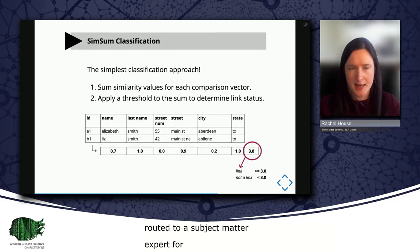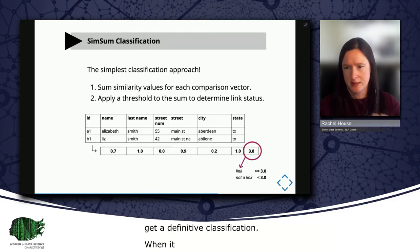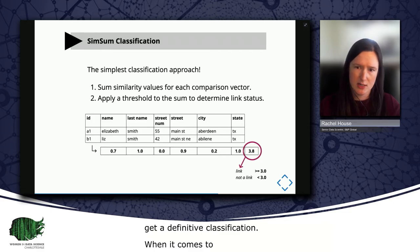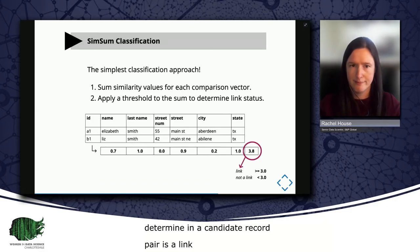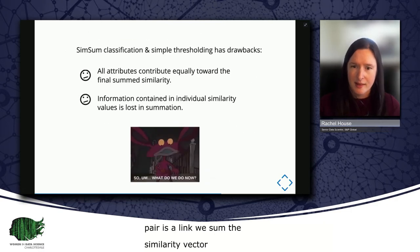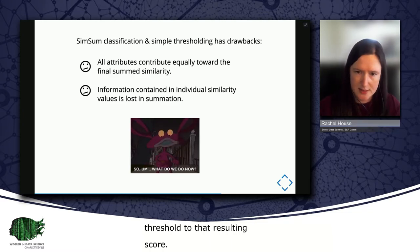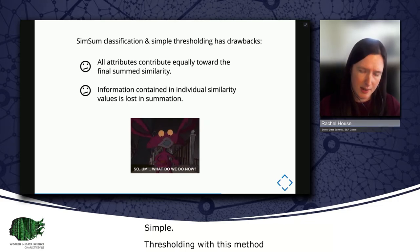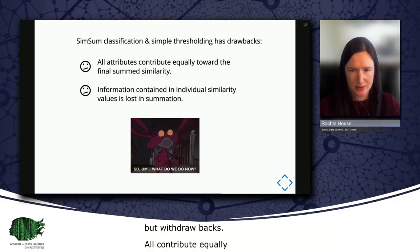When it comes to classification approaches, the simplest method is SimSum, which is a cute moniker for summing the similarity scores of the comparison vector. And as you can see in the example, to determine if a candidate record pairs a link, we simply sum the similarity vector and apply a threshold to that resulting score. Simple. Thresholding with the SimSum method, however, though straightforward, has some drawbacks. Namely, all attributes contribute equally to that final sum similarity. And information contained in those individual values is lost in that single summation.